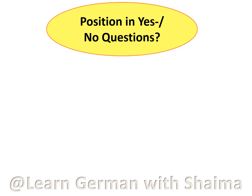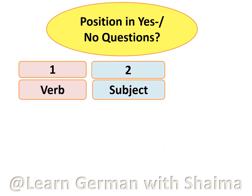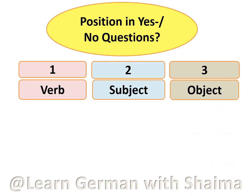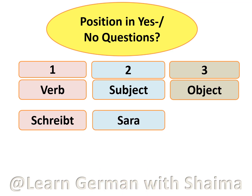Now talking about the position in yes/no questions. In the first position you always have the verb, in the second position you always have the subject, and in the third position you always have the object. So whenever you have a question to which the listener has to answer yes or no, the structure is: verb plus subject plus object. For example: Schreibt Sara ein Buch? Schreibt is the verb in first position, Sara is the subject in second, and ein Buch is the object in third. The listener answers: Ja, Sara schreibt ein Buch. Nein, Sara schreibt kein Buch.